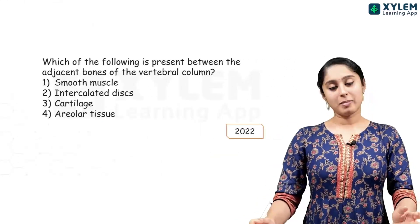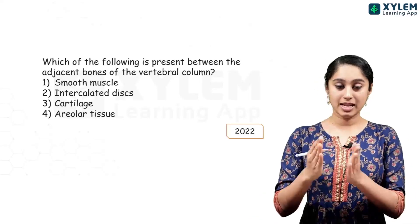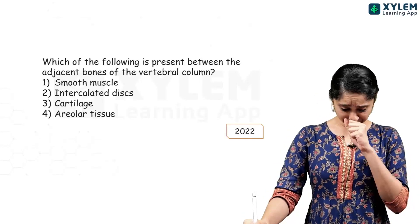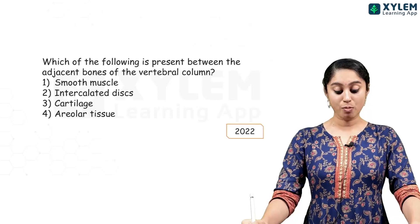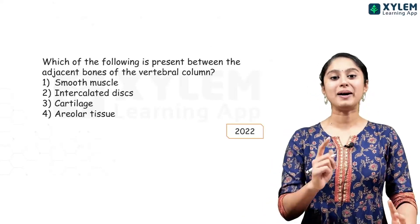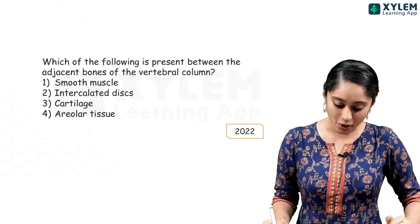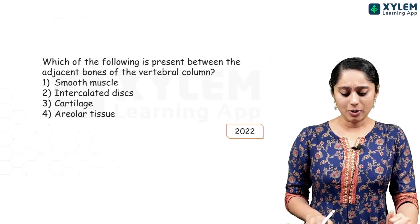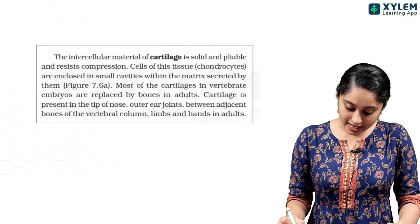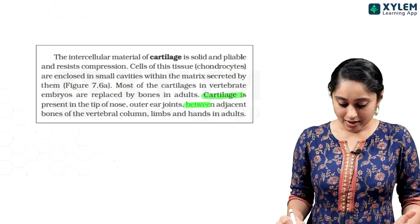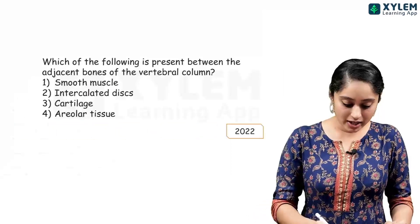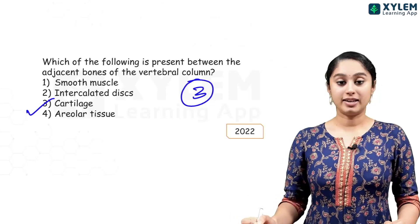In 2022, there is a question: which of the following is present between the adjacent bones of the vertebral column? If you look at where cartilage is present — tip of the nose, outer regions, and between adjacent bones of the vertebral column — clearly, my answer will be cartilage, option 3.